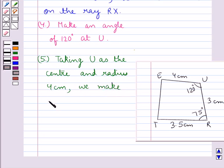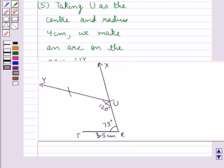So we have made an arc of radius 4 cm on the ray UY. Now let's mark this point as E.